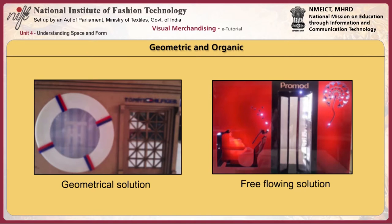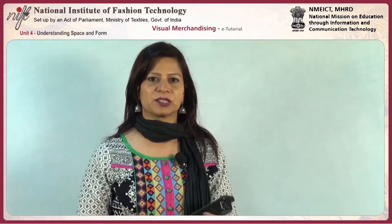Geometric and organic, or free-flowing, solutions for a window or facade were given by students in the class for the brands studied by them. The first one, for Tommy Hilfiger, is a very geometrical solution, and the second one, for Pramodh, is a free-flowing solution. If one tries to understand the brand, one can see that both these solutions — geometric and organic — very well represent the brand and its femininity.